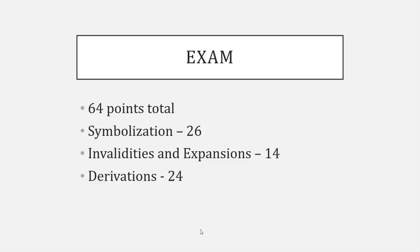Here's the overall structure of the exam. There are going to be 64 points in total: 26 of those are symbolizations, 14 are invalidities and expansions, and 24 are derivations. We'll go through each of these and show you exactly what you're going to see.